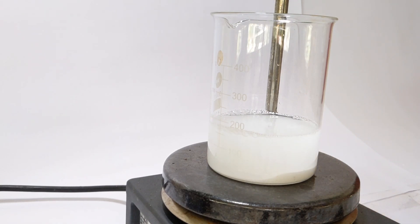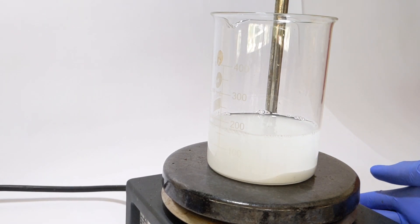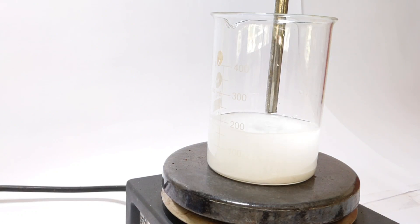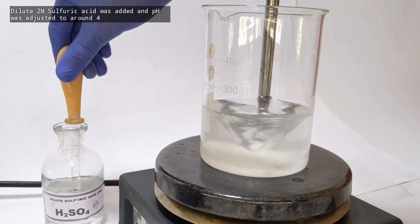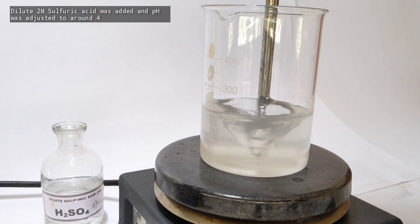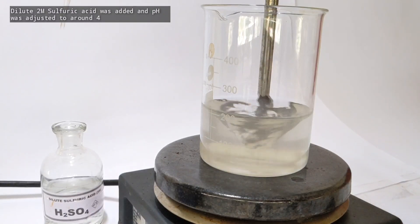Stirring was turned on and continued until everything dissolved. It took around four to five minutes of stirring to get everything completely dissolved. Finally we were left with a clear solution. Now a few milliliters of dilute 2 molar sulfuric acid was added using a glass dropper in order to make the pH around 4. I added about 15 milliliters of acid in total.